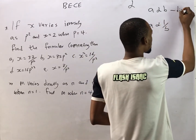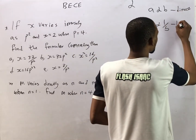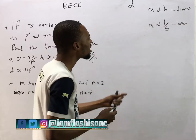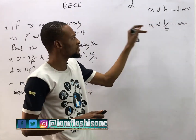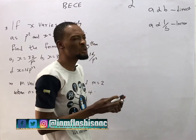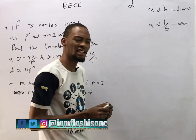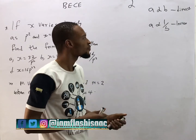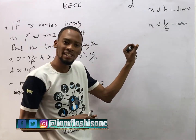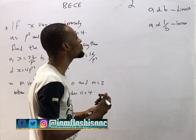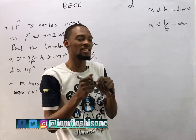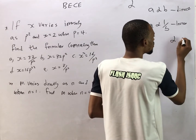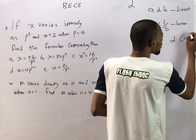This is direct and this is inverse. Now when you have variation questions, we don't solve with the proportionality sign — we solve with an equality sign. To change the proportionality sign to an equality sign, we simply introduce a constant. In that case, we change the proportionality sign to equals k.